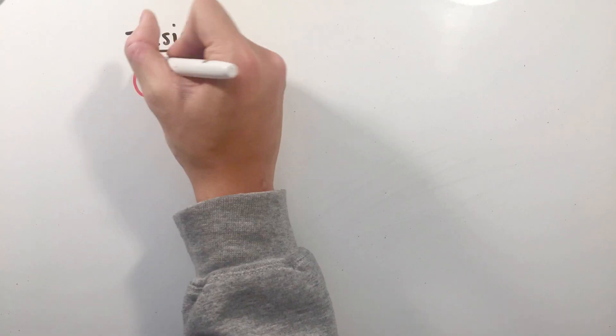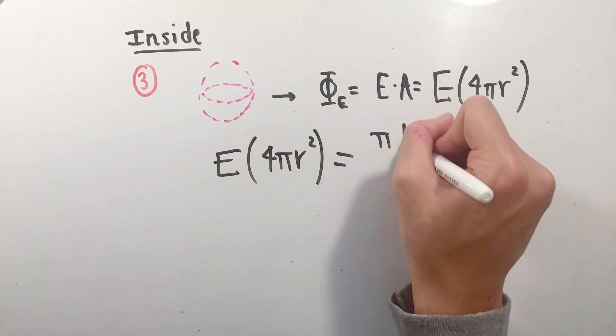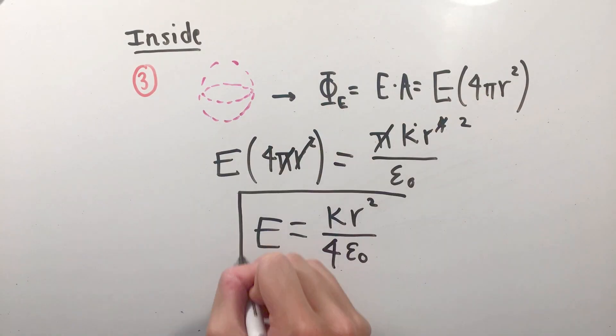From there, we can simply solve for the electric field inside of the sphere. Making use of the symmetries, we can simplify our flux equation and solve for the electric field inside of a sphere of charge.